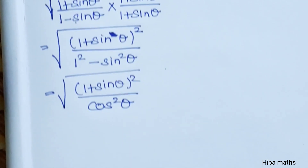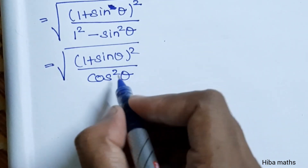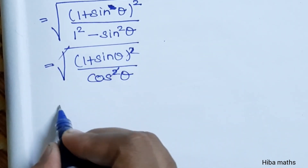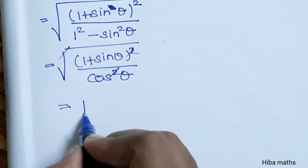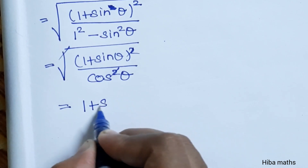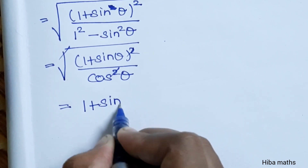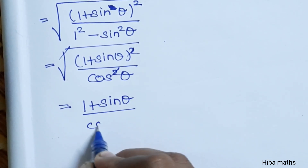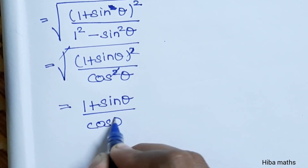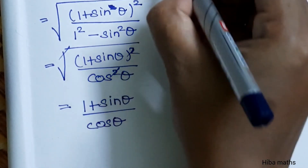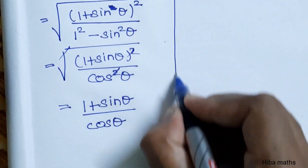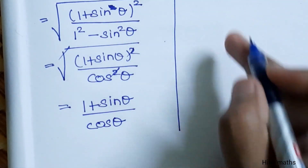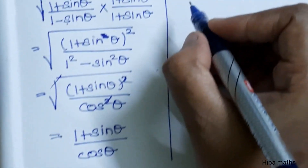Taking the square root, the square and square root cancel, giving us (1 plus sin theta) divided by cos theta. This is the result of the first part of the LHS.